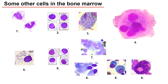Number four is the biggest cell in the bone marrow. The size is about 50 times bigger than a normal cell, very close to 100 micrometers. These cells are going to form the platelets. This is the megakaryocyte.